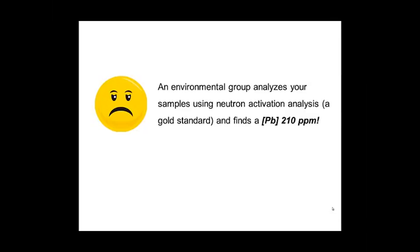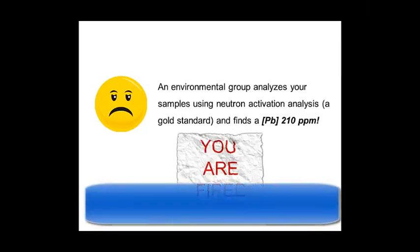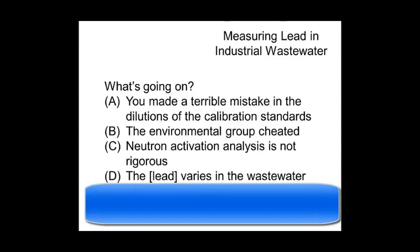So how could you have done this differently? Well, maybe you made a terrible mistake in diluting the calibration standards. No, you did that right. How about the environmental group cheated? No, they didn't cheat. Maybe the neutron activation analysis was messed up. No, it wasn't messed up. How about that the lead in the wastewater changes with time? It changes a little bit, but not orders of magnitude.